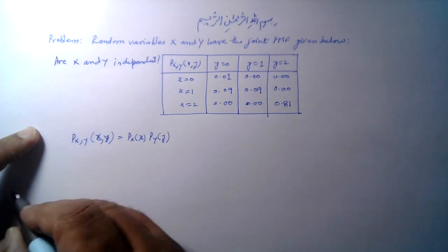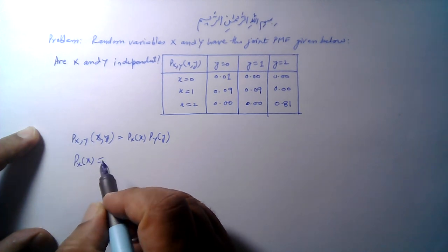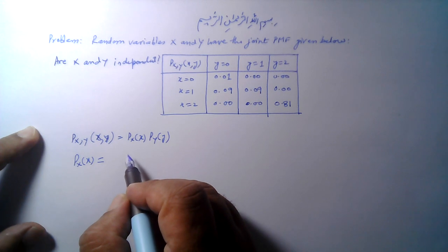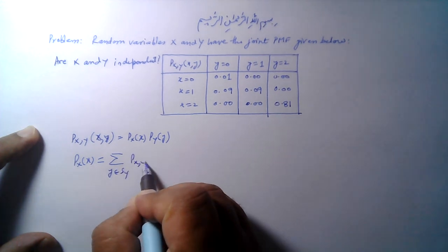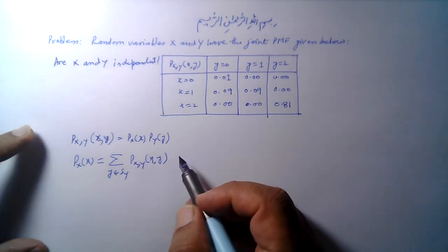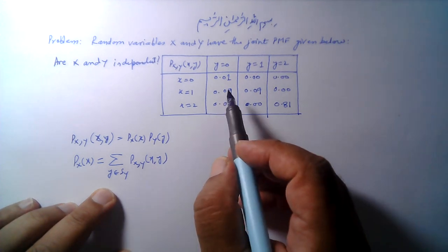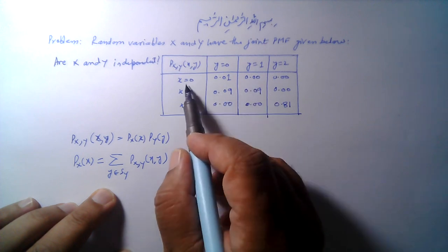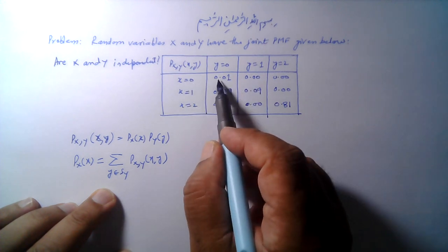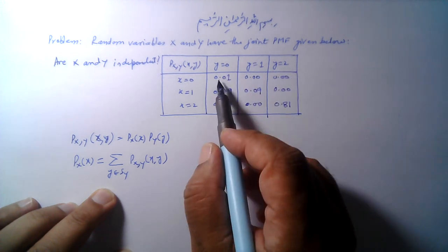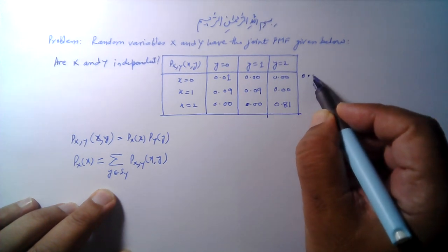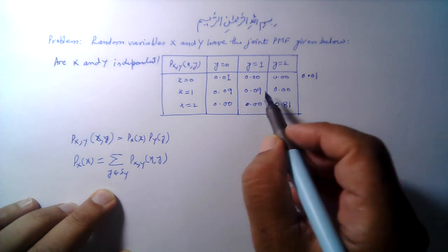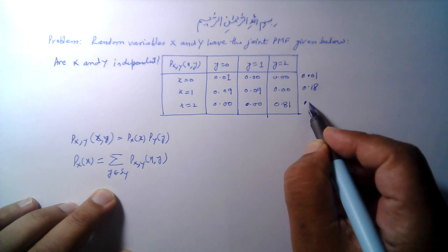The marginal PMF of random variable X is given by the sum of all the probability values of Y for a given value of X — that is, summing over all Y in S_Y of P_{X,Y}(x, y). For X equal to 0, we sum all probability values in that row, which comes out to 0.01. For X equal to 1 this comes out to be 0.18, and for X equal to 2 this comes out to be 0.81.